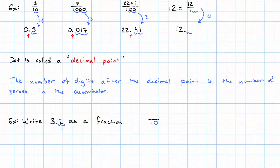What will the numerator be? Well, it'll just be the number three, two with no decimal point. We typically call that 32.